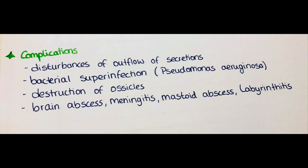Also seen is cholesteatoma, which is a growth of squamous epithelium of the external acoustic meatus into the middle ear, forming a kind of polyp protruding from the eardrum to the outside. This defect in the eardrum with debris in the ear canal means the enzymes of the cholesteatoma can further destroy the bony structures within the ear.